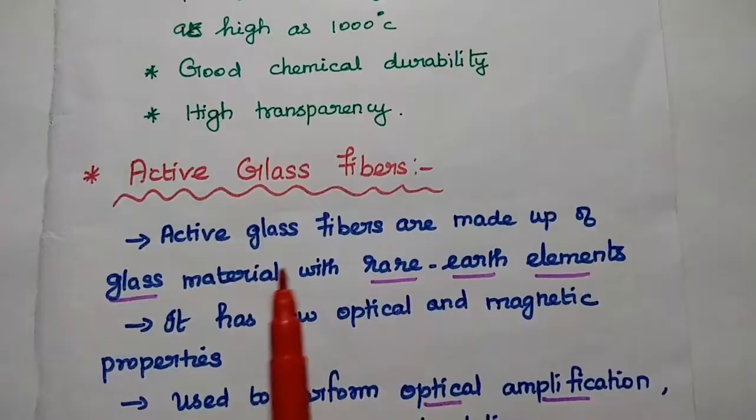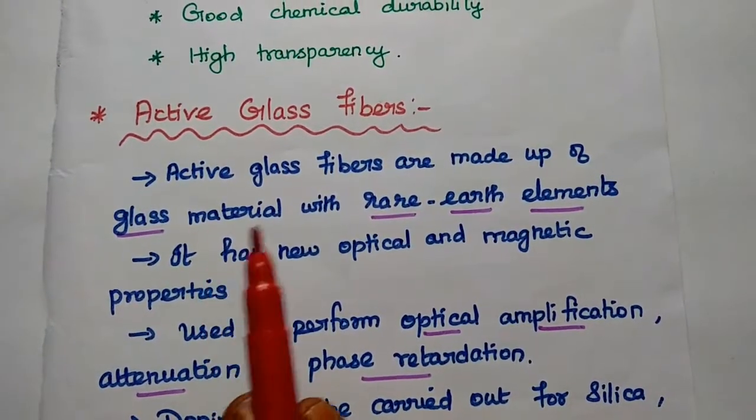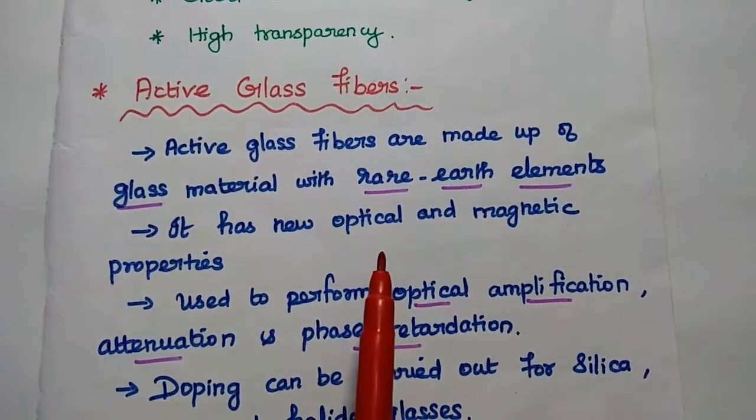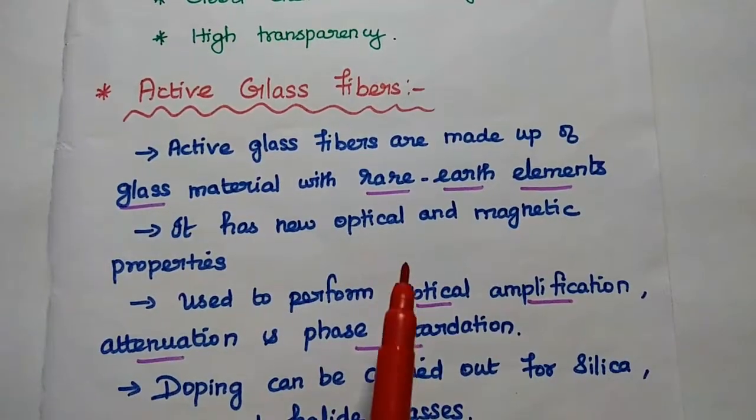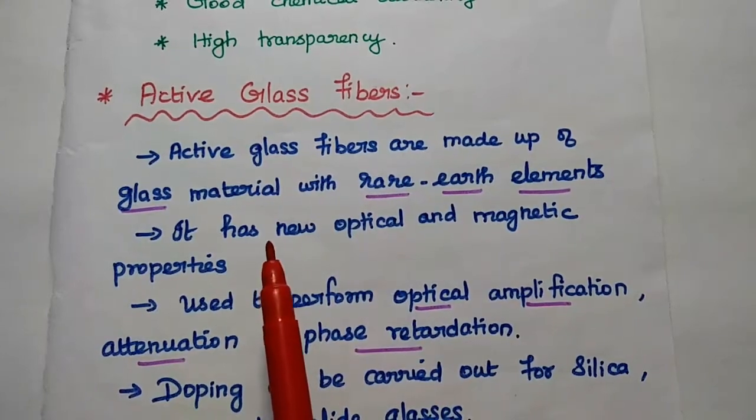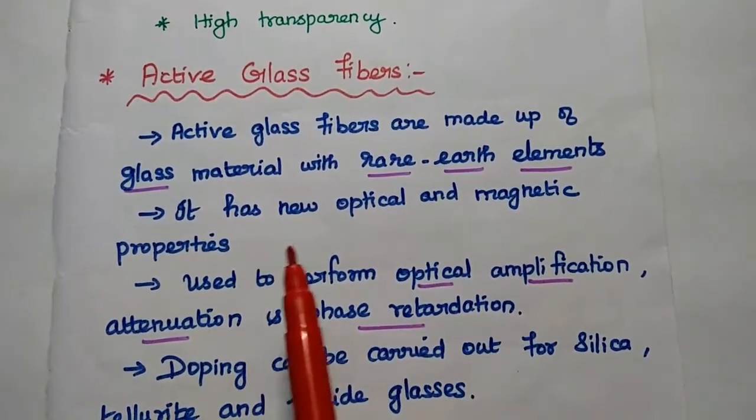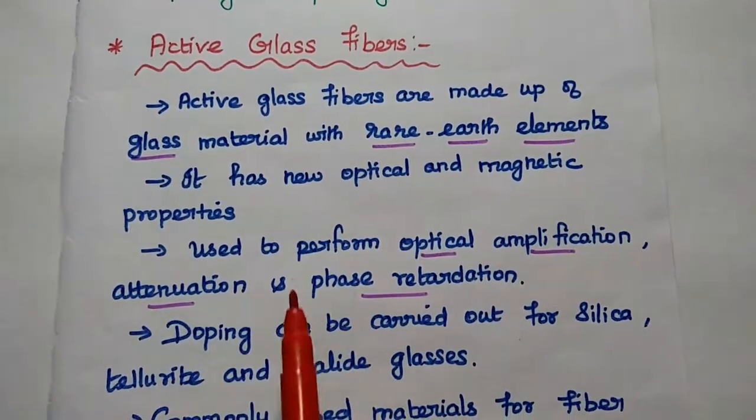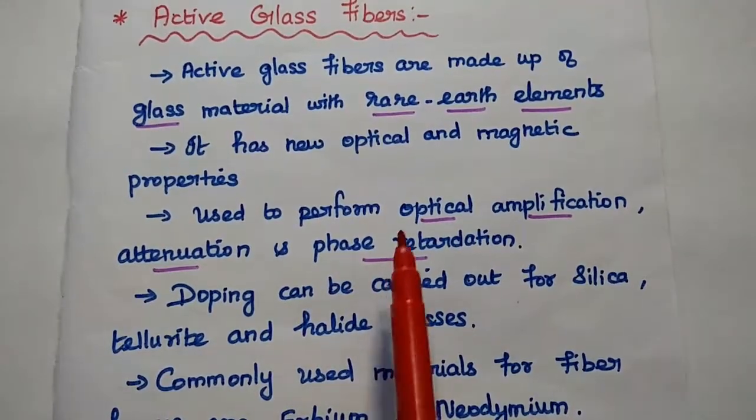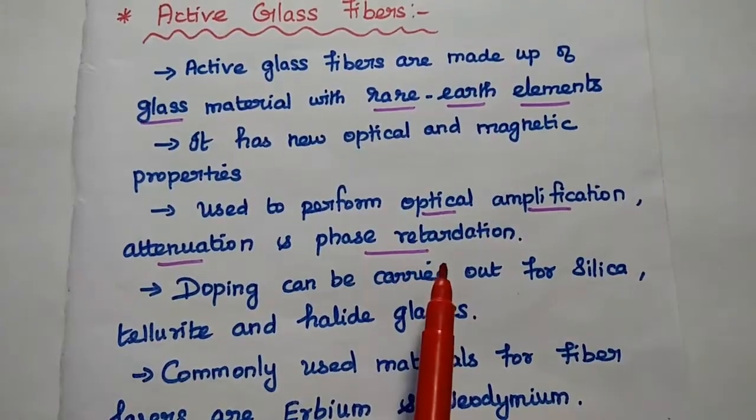Next one is active glass fibers. Active glass fibers are made up of glass material with rare earth elements. Rare earth elements means here we can consider erbium, neodymium. So rare earth elements can be combined with the glass material to give active glass fibers. It has new optical and magnetic properties. These active glass fibers are widely used to perform optical amplification, attenuation and phase rotation.